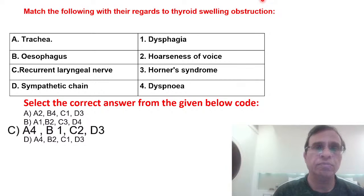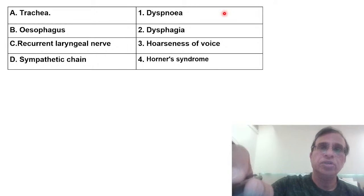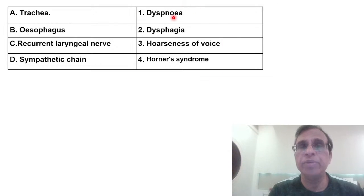Trachea block causes dyspnea, esophagus block causes dysphagia, recurrent nerve causes hoarseness of voice, sympathetic chain causes Horner syndrome. This is the correct table. Must have matched correctly. Obviously they picked up from here and there but it was a very straightforward question.